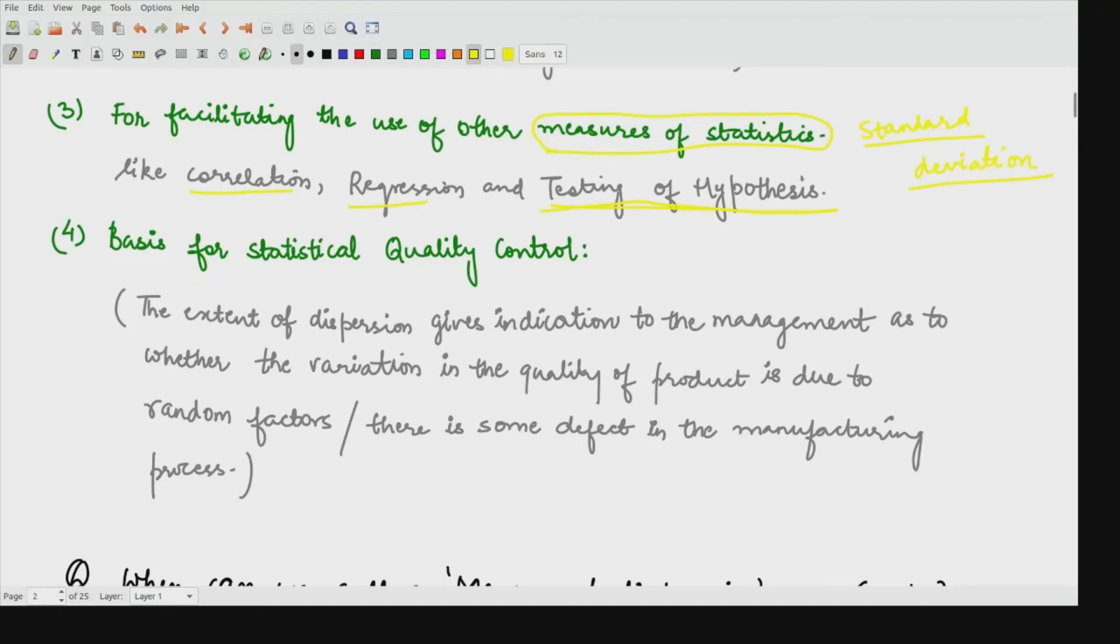It performs the basis for statistical quality control. Statistical quality control means it will tell you the extent of dispersion. That would determine whether a kind of product that is being produced in particular factory would that contain random errors. The extent of dispersion gives you the indication to the management as to whether the variation in the quality of product is either due to random errors or there is some effect that is present over here.